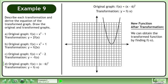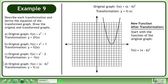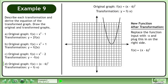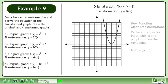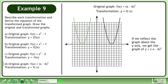We can obtain the transformed function by finding f of negative x. Start with the function of the original graph. Replace the function input with negative x and plug this in on the right side. If we reflect the graph about the y-axis, we get the graph of y equals negative x minus 6, squared.